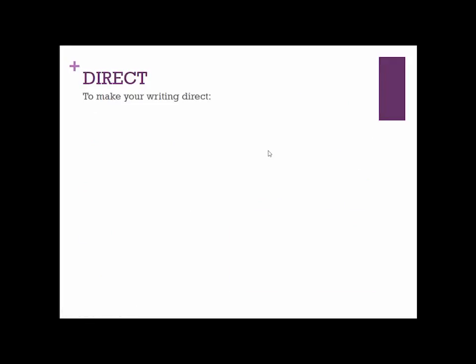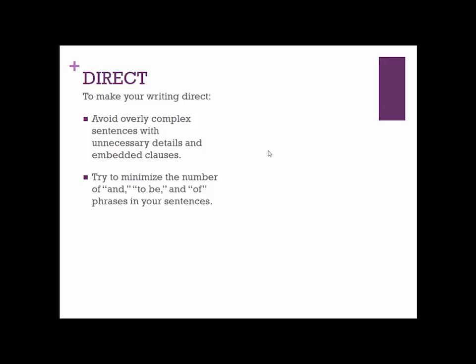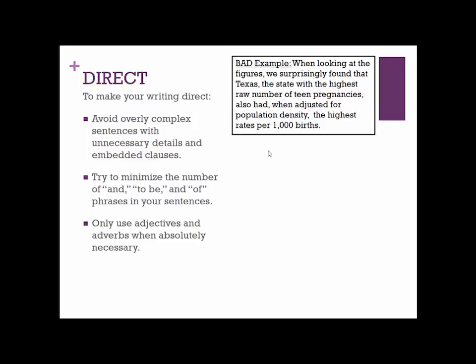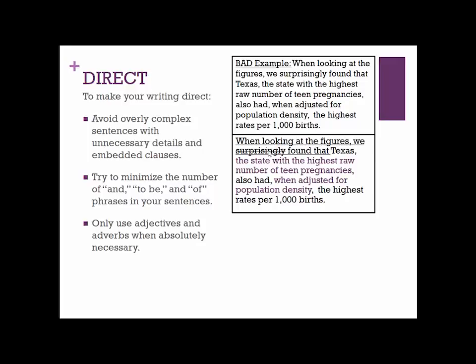A related piece of advice is to make your writing direct — avoid overly complex sentences with unnecessary details or embedded clauses. We're taught when we're little to write really simple sentences, and then we add more and more. As a clear and direct writer, you want to trim back on those phrases that clog up your writing. Try to minimize what I call 'little words' — words like 'of,' 'to be,' and 'and,' and phrases that begin with those words, because they really tend to clutter up writing. Only use adjectives and adverbs when absolutely necessary.